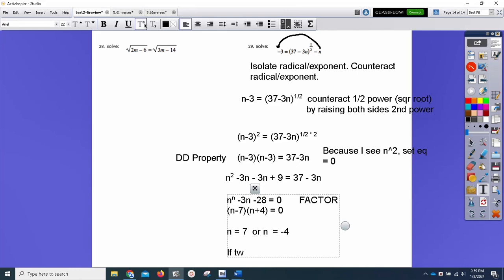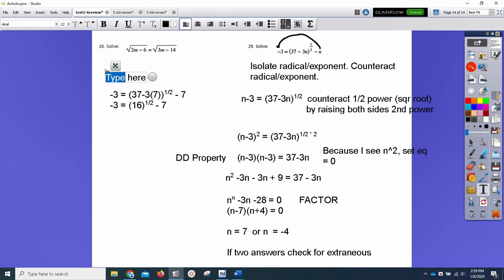Now I warned you guys about this. If two answers, check for extraneous. That's what I'm going to do. We check for extraneous. So let's go to the original equation. Negative 3 equals 37 minus 3, let's plug in the 7, to the 1 half minus 7. Negative 3 equals 37 minus 21 is 16. You need to know that the 1 half power is the square root. So this gives me negative 3 equals square root of 16, 4 minus 7. Negative 3 equals negative 3. It's a real answer.